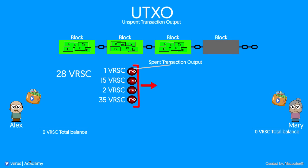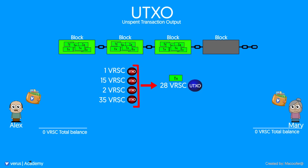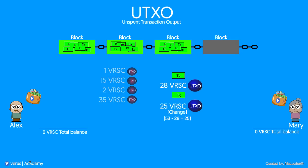Next, two new transactions are created on the blockchain for two new UTXOs: one for the 28 Verus going to Mary, and one for sending the change of the transaction back to Alex. The transactions will go into the latest block in the blockchain so they can be confirmed by all the nodes.